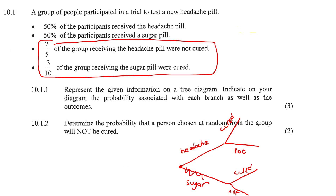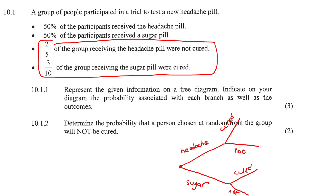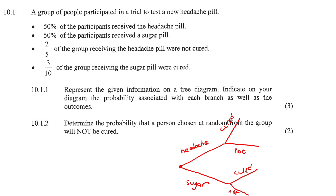If I go this way, that would be people who took a sugar pill and they were cured. If I go this way, this would be all the people who took a headache pill and they were cured. We know that it was 50% sugar and 50% headache, so I'm going to say 1 over 2. Let's draw that a bit nicer — 1 over 2 and 1 over 2.